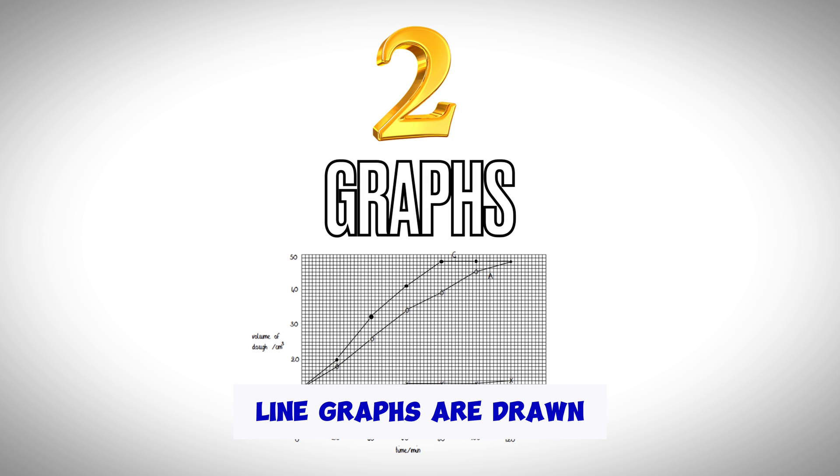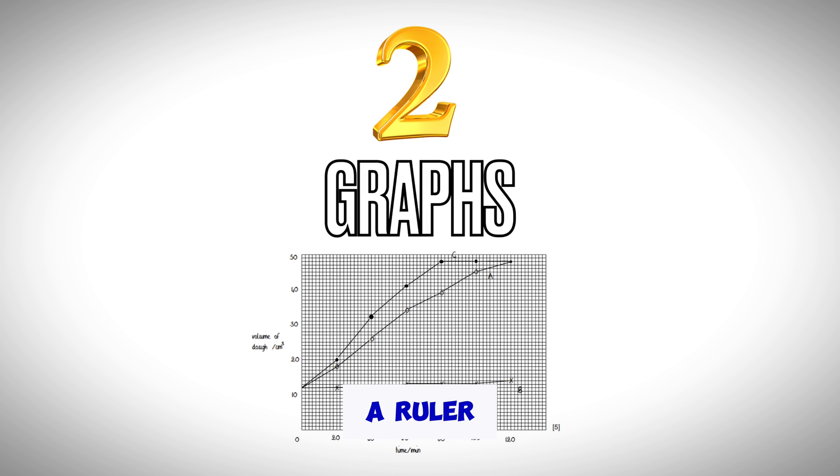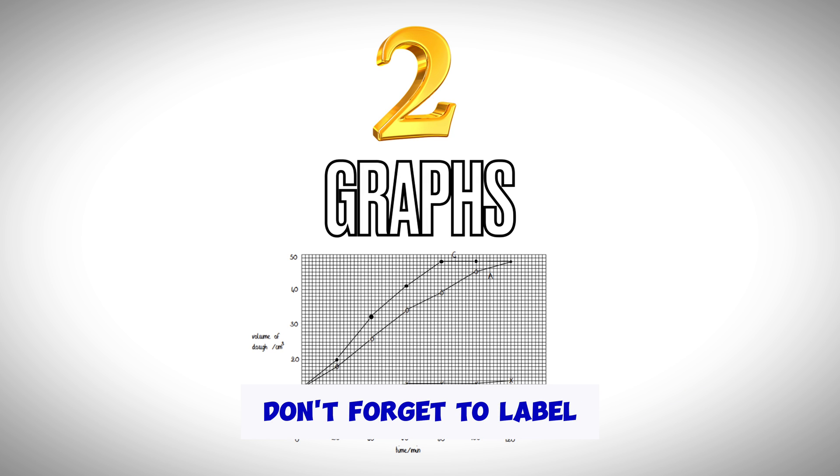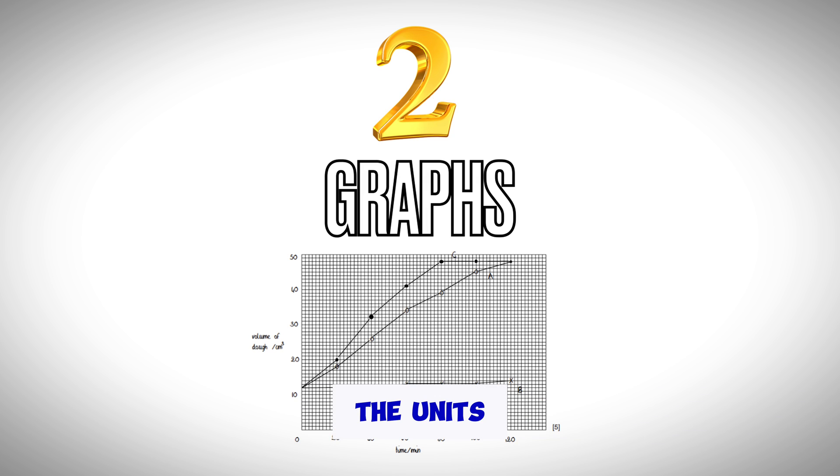Line graphs are drawn point to point with a ruler. Don't forget to label the axes and write the units.